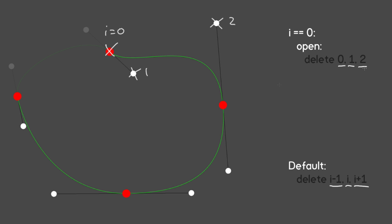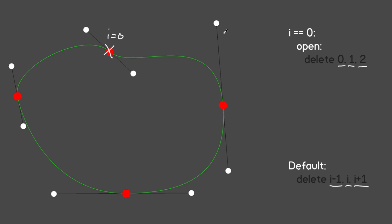What if we make this a closed path and again want to delete the first anchor point? Here it's got two control points, so it looks like the default case — delete points i-1, i, and i+1. But doing that causes a problem: the control point over here becomes element 0, the first point in our list. In the code we rely on the first point always being an anchor point. So before deleting, we take the last point in the list and set its position equal to the position of the second point, then delete the anchor and its two control points.